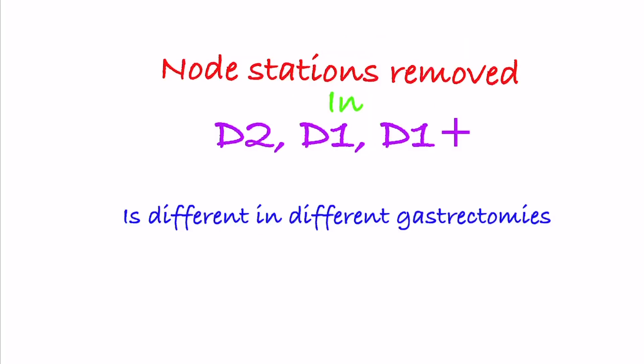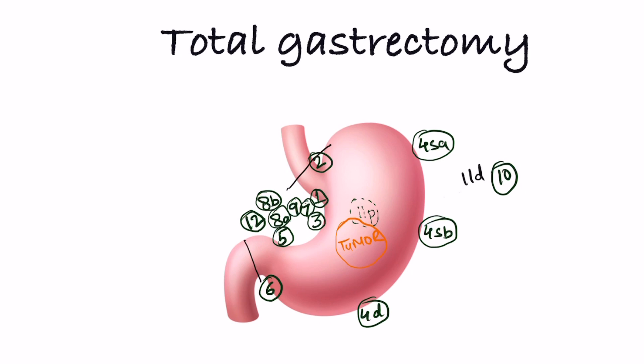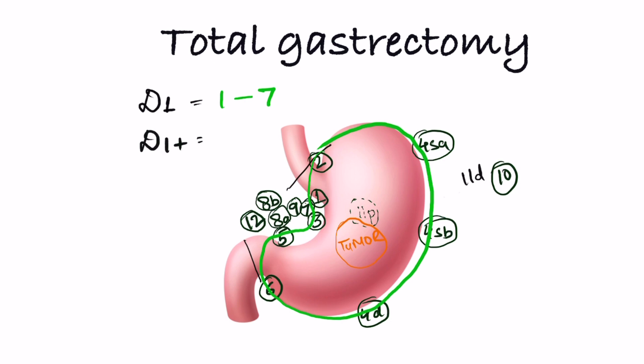The definition of D1, D1 plus, D2, and D2 plus is different for different types of gastrectomies. In the case of a tumor in which total gastrectomy is done, since the tumor is large, all stations 1 to 7 are high-risk nodes. Therefore, D1 means removal of nodes 1 to 7, as they are all in proximity and hence at risk of having malignant cells.